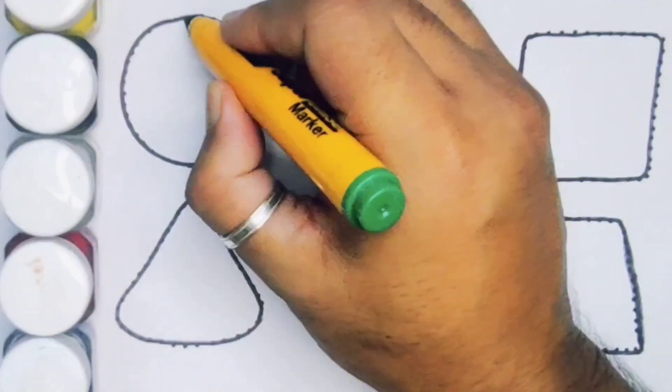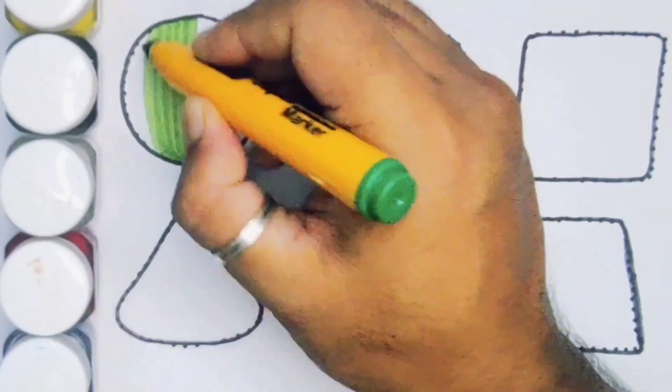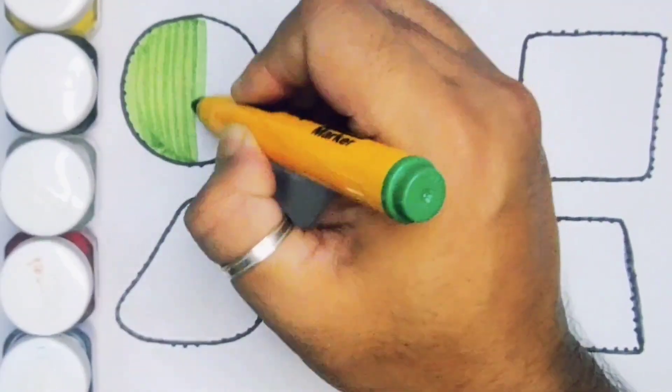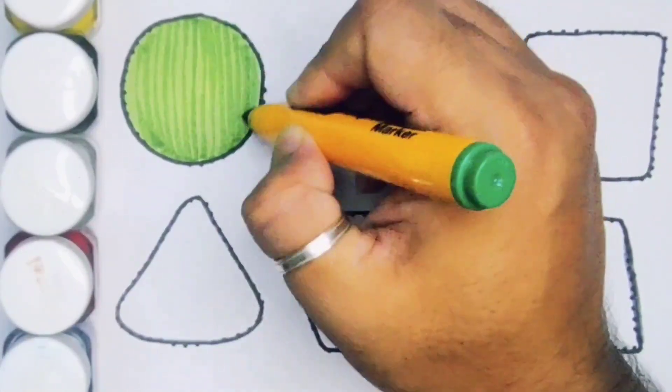Now we're going to put the color. Green color, circle. Circle.